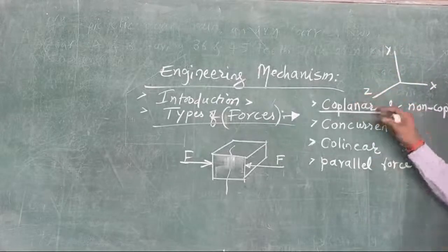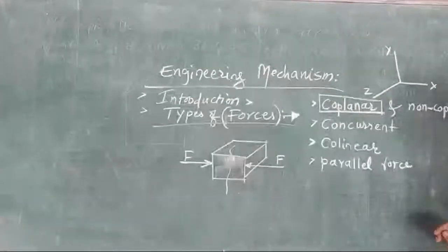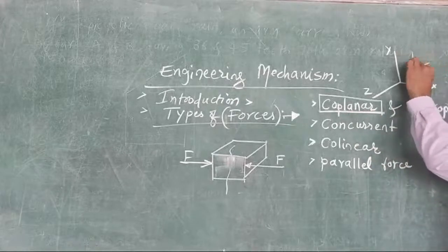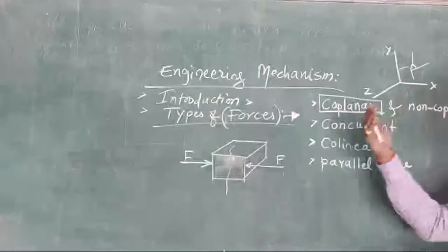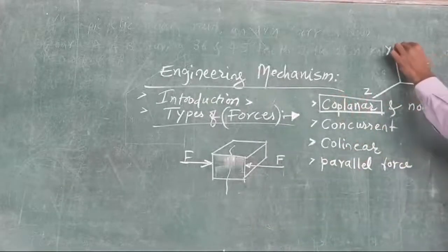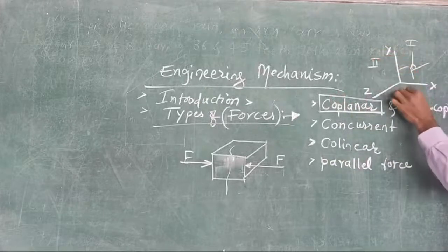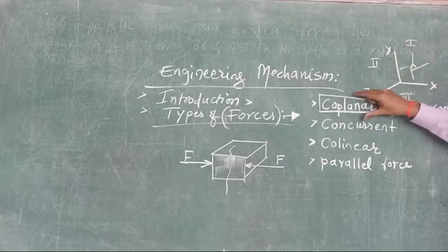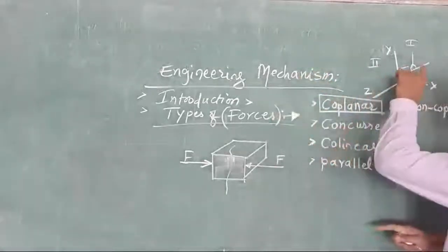When all the forces are acting on the same plane, then we call it coplanar forces. Suppose the number of forces are acting on the same plane, or in respect of their directions — their nature — but all the forces are acting on any one plane, either this plane, or this plane, or this plane. Such type of forces we call as coplanar forces.